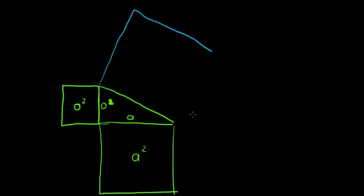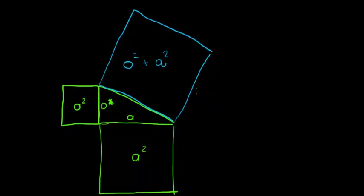Obviously I've got very ugly-looking squares there, but I'm sure you get my point. This square that we have here would be the opposite squared plus the adjacent squared. So what would the side length be? To find the side length of a square, I take the area of the square and take the square root of it. So that would be the square root of O squared plus A squared.